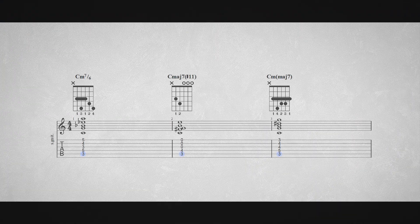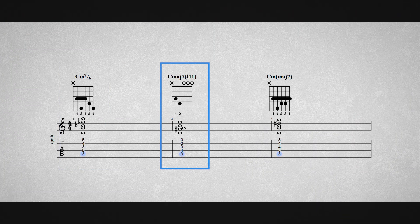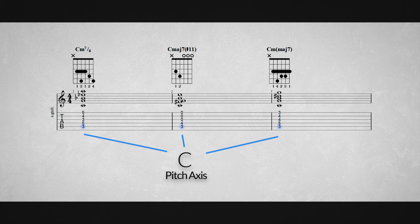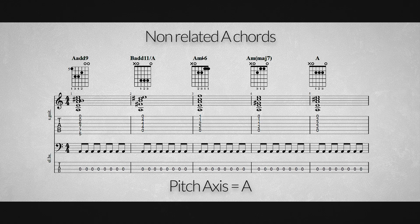What catches the eye when we look at these chords: C minor 6, C major 7 sharp 11, and C minor major 7? Indeed, they all share the same root note — the pitch axis is C. So if your band members play a drone riff containing just one note, for instance the note A, you can play any chord with the root A over this drone riff — like an A added 9 chord, a B chord with an A in the bass, an A minor flat 6 chord, an A minor major 7 chord, and back to the A chord.